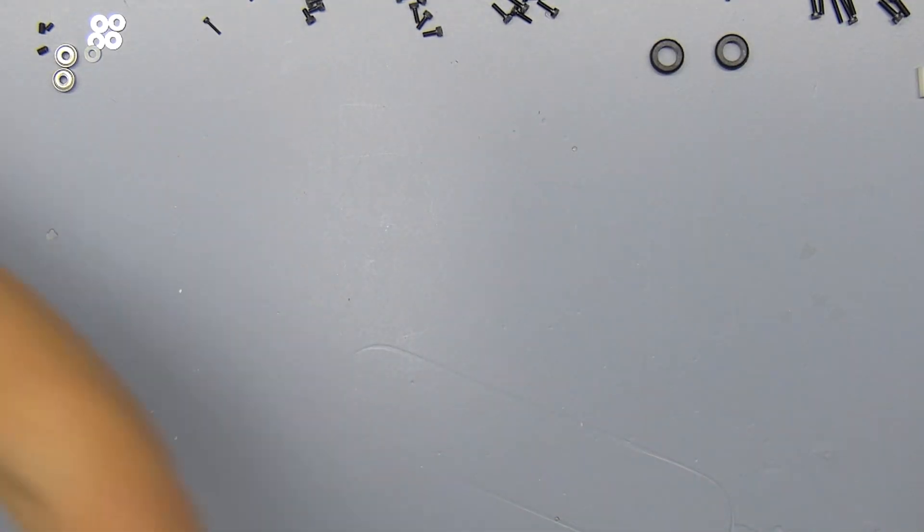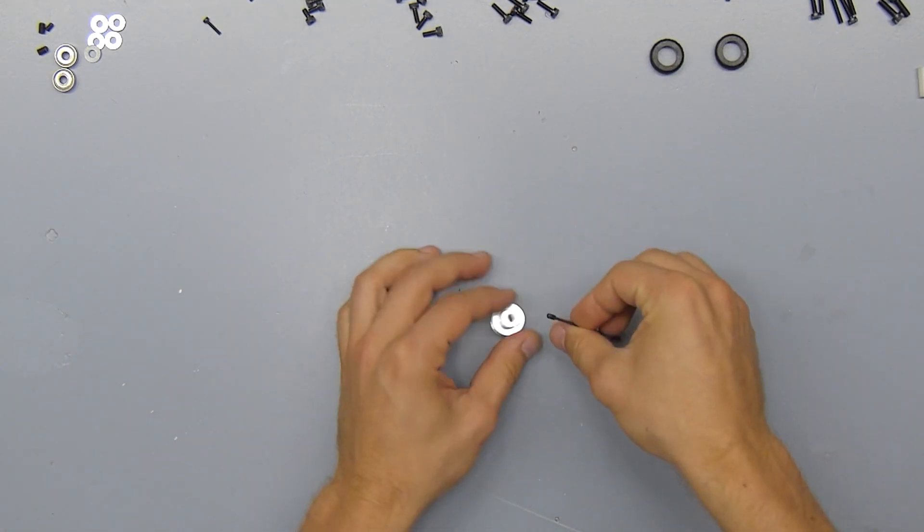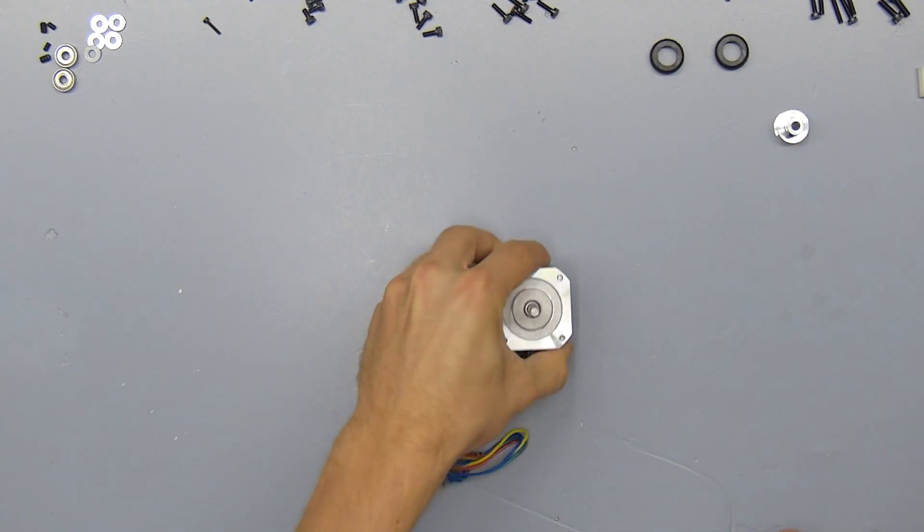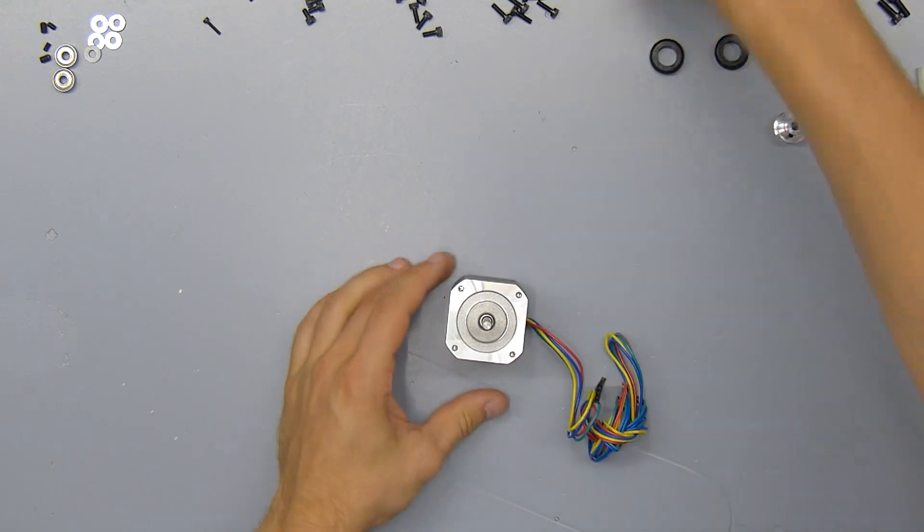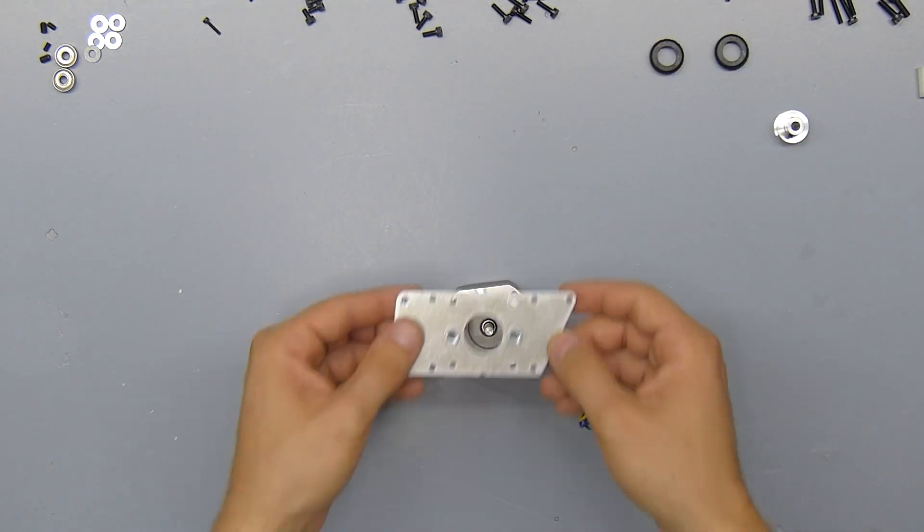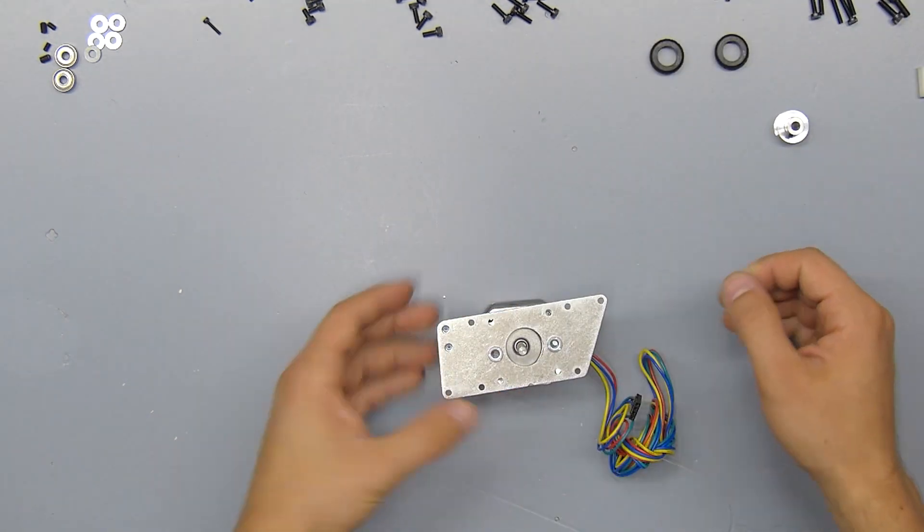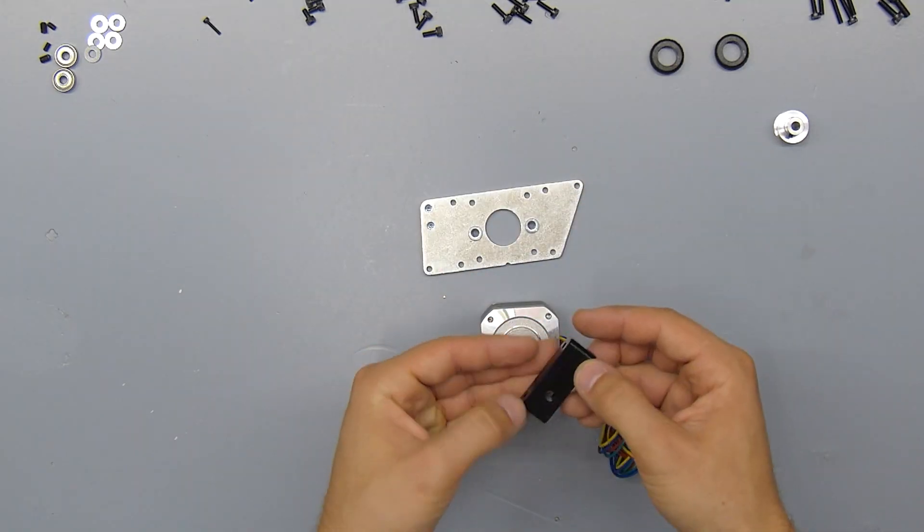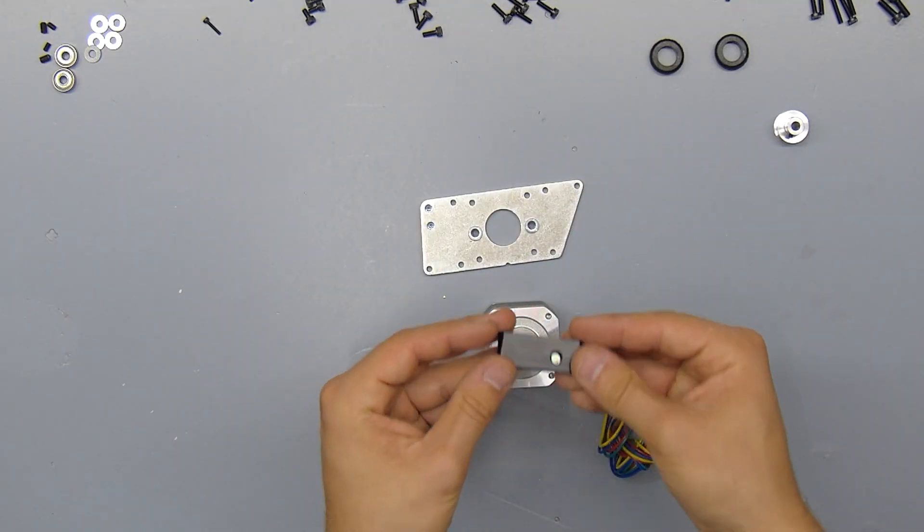So first up I'll remove one of the grub screws from the remaining pulley and we can set the pulley aside for later. And for the rest of the assembly, the orientation of all the parts is going to be crucial, so please try and stick as closely as possible to what I show you here.